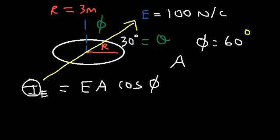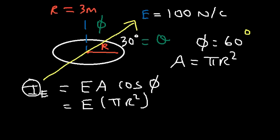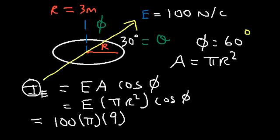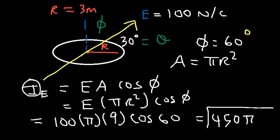The area of the disk is π r². The electric flux equals E times π r² times cosine phi: 100 times π times 9 times cosine 60. Cosine 60 is one half, and 100 times 9 is 900, so half of 900 is 450. The electric flux is 450π newton square meters per coulomb.